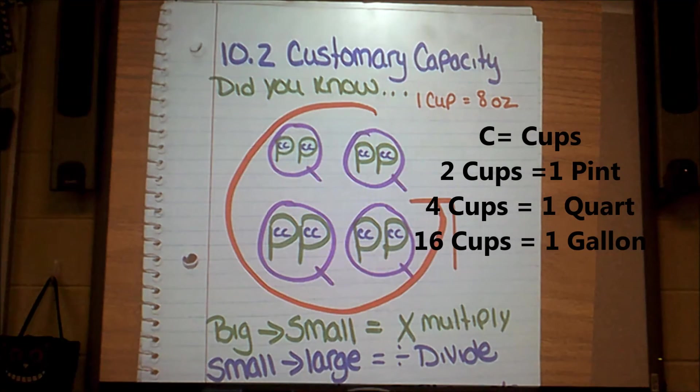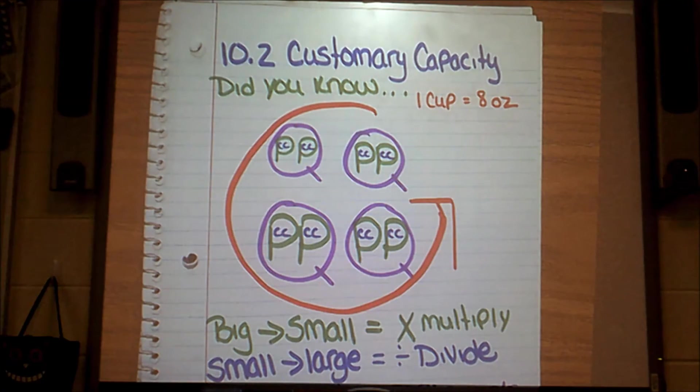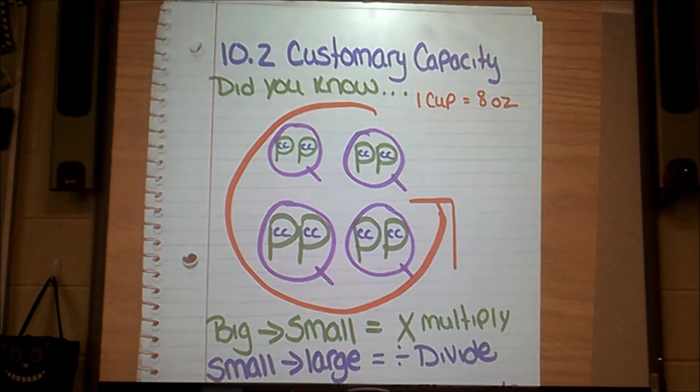And those C's stand for cups. So inside each P, each pint, I have two cups. So one pint is equal to two cups. As always, as you see on the bottom there, we are still using our big to small, you multiply and small to large divide. We are still using that rhyme to help us with our conversion. Up at the top in red, you might also see one cup equals eight ounces.